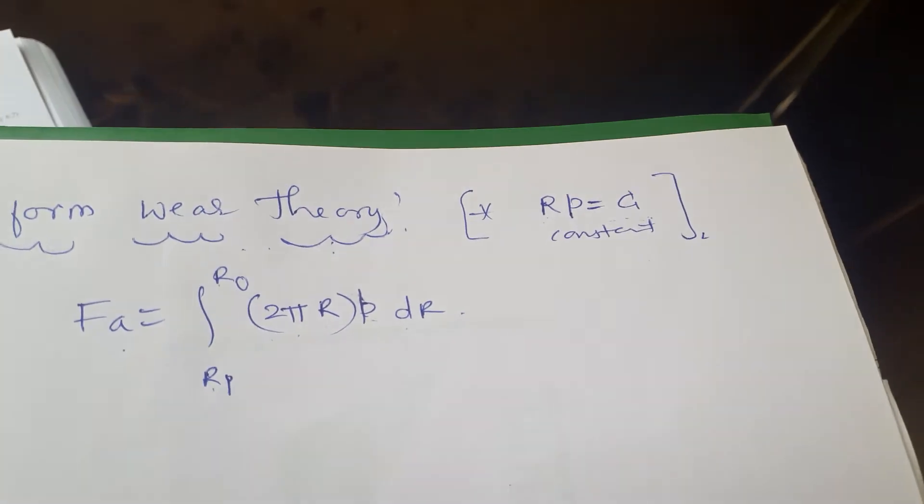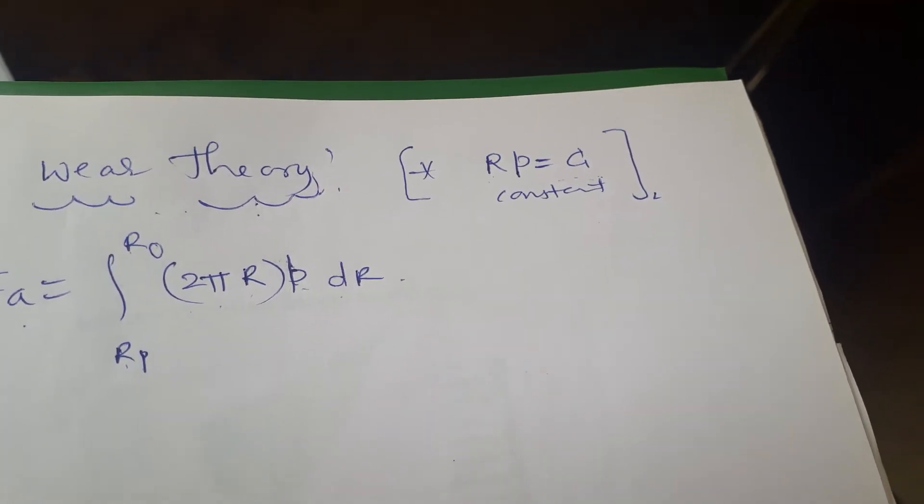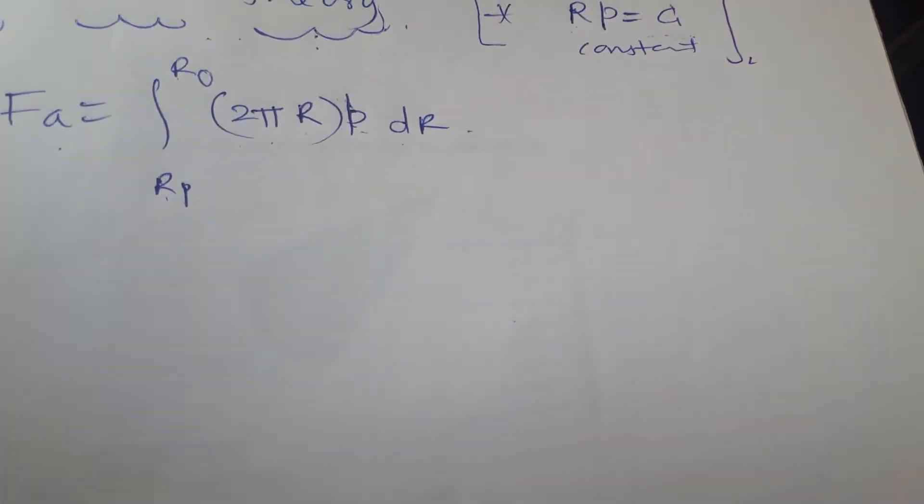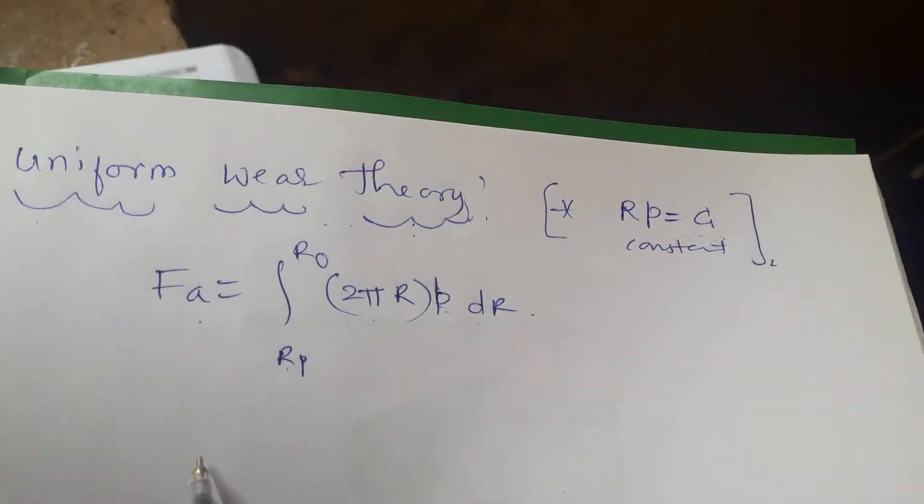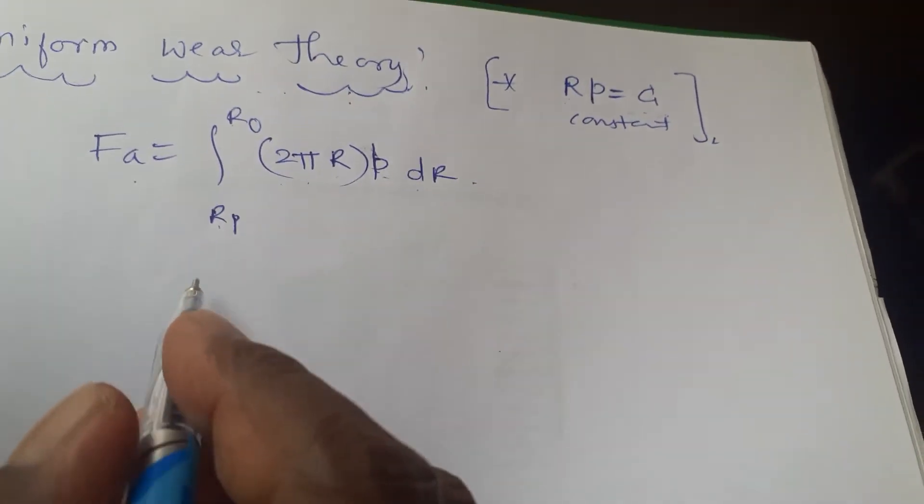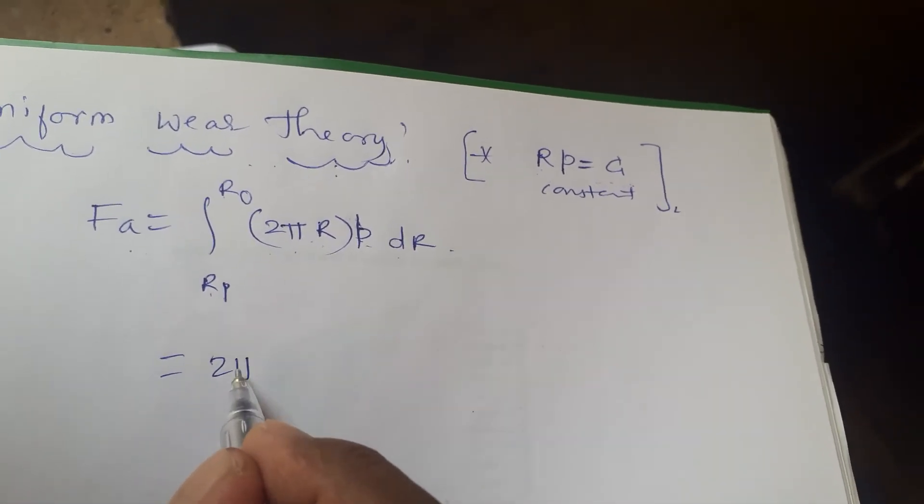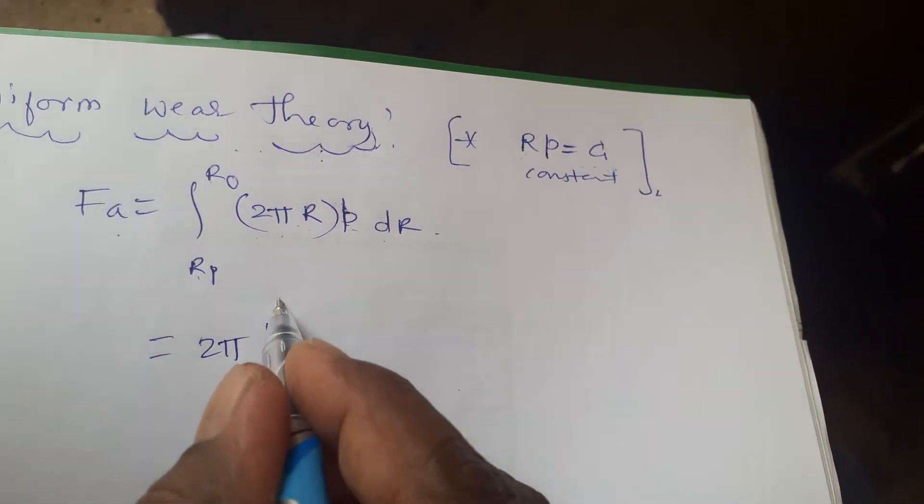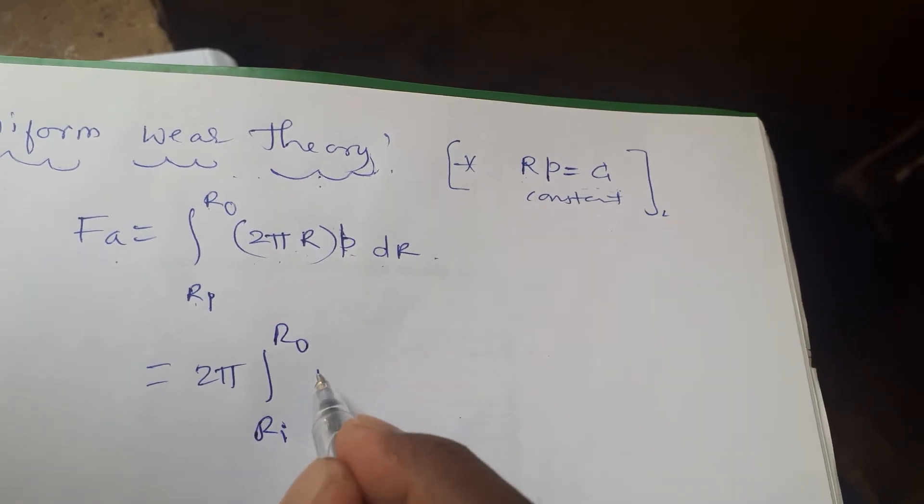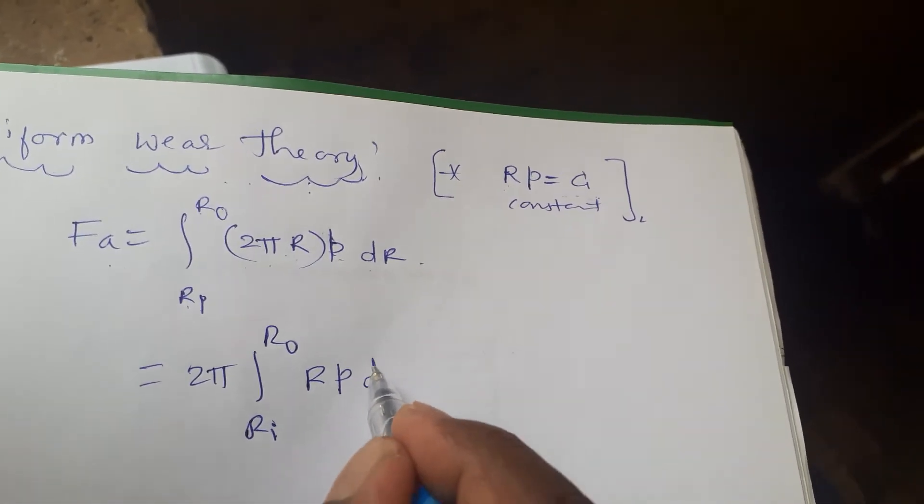Ri to RO 2 pi RP into dr is what our previous equation. We know that. Now what we are going to do here. As I said, RP we should make a constant. So very simply what I will do? I will take this 2 pi as a outside Ri, R out and this RP dr.